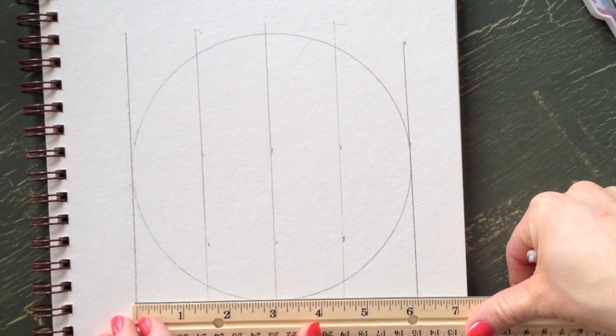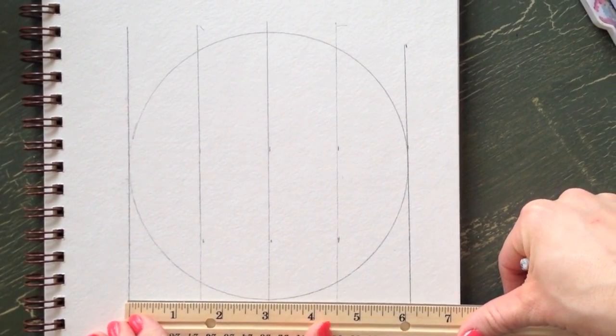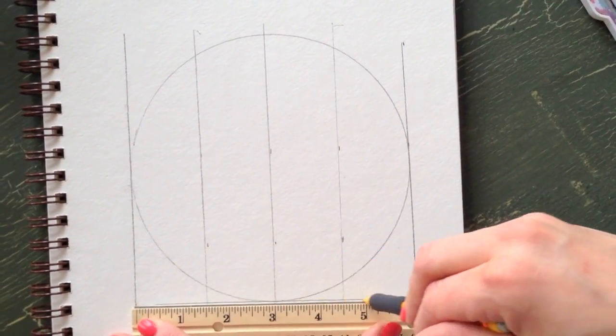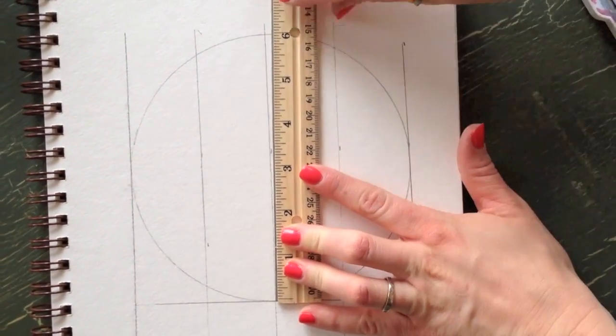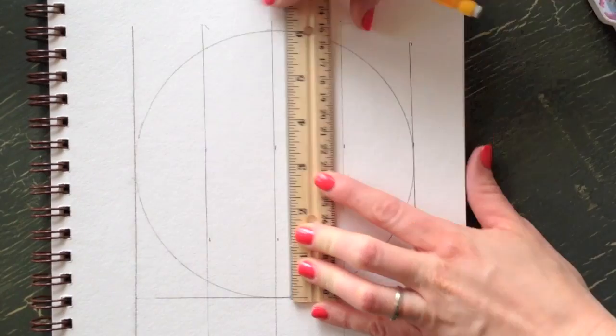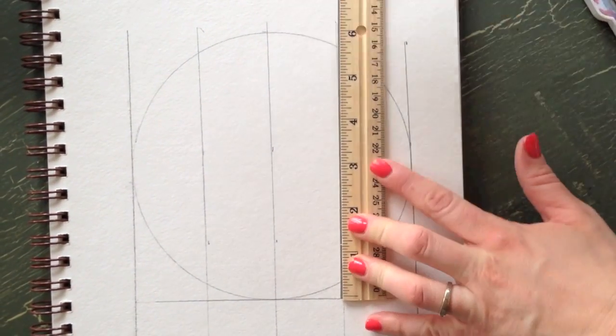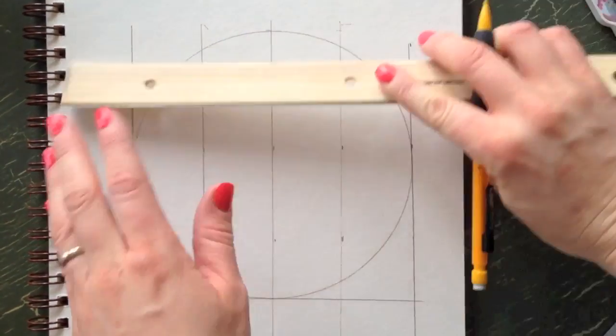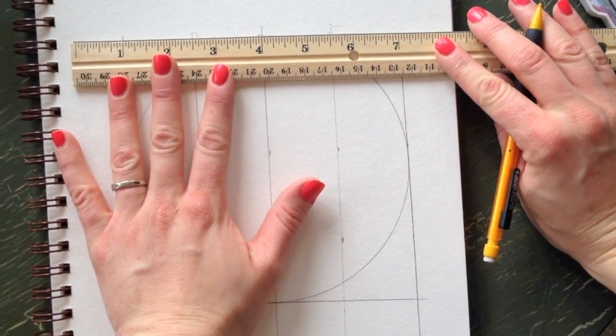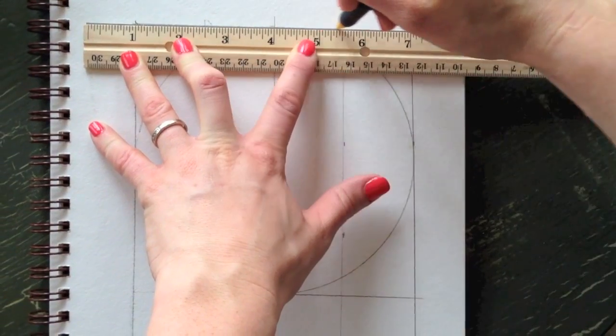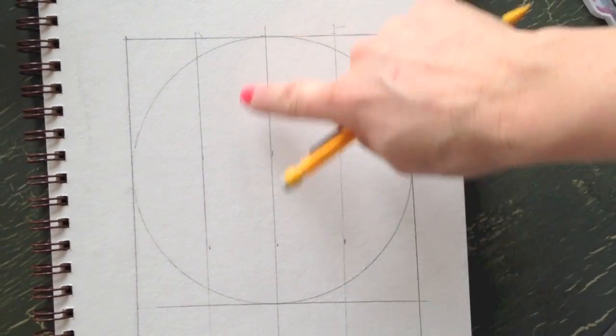Then you want to do the same thing with this side. Draw a straight line across, figure out how far it is to this side. Make a straight line across the top. I keep running into the camera, so okay.